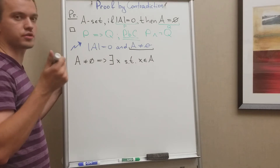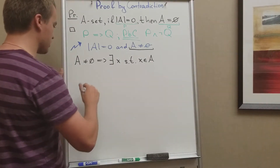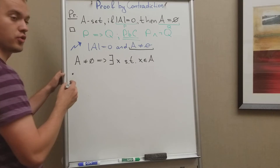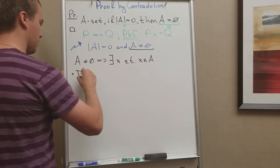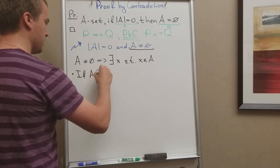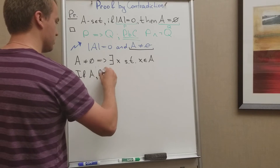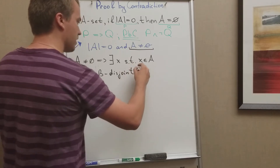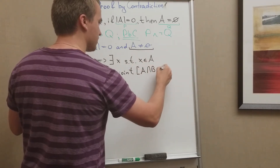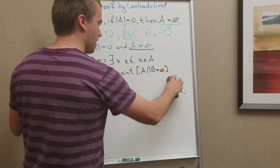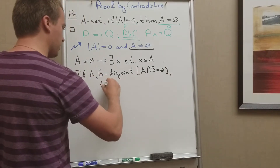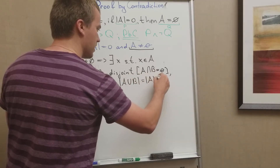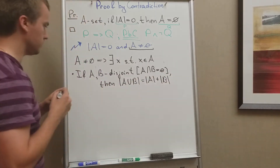I'm going to use the following fact from the inclusion-exclusion principle: if sets A and B are disjoint — meaning their intersection is the empty set — then the cardinality of A union B equals the cardinality of A plus the cardinality of B. I'll use this fact with some carefully constructed sets.